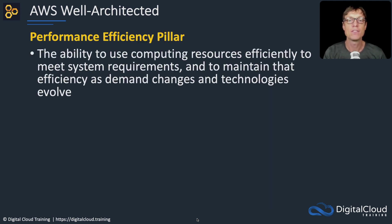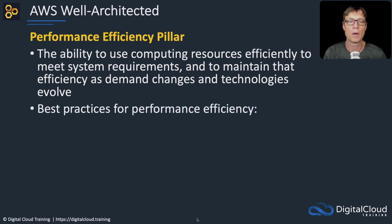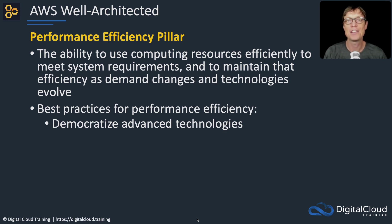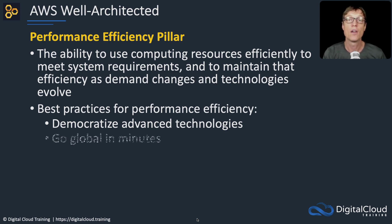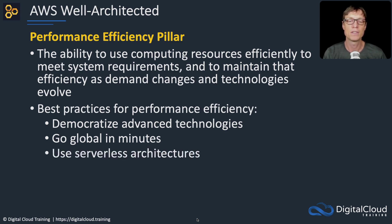Next, we have the Performance Efficiency pillar. This is about ensuring our resources are working to meet requirements and changing as demand and technologies evolve. Best practices: democratize advanced technologies — AWS wants you to leverage the technologies and services they provide, including managed services, event-driven architectures, and serverless services. Use as much of that as possible because it delivers value to your business. Go global in minutes — the ability to deploy your applications all over the world very easily. Use serverless architectures wherever possible, so you're not managing the underlying infrastructure, managing patches and systems, and you're leveraging a higher level of service and able to scale more easily.